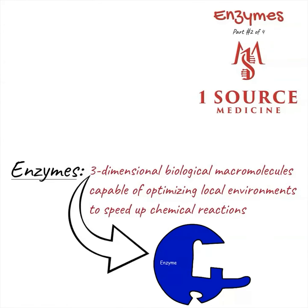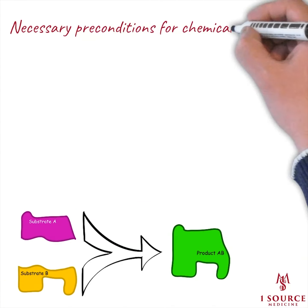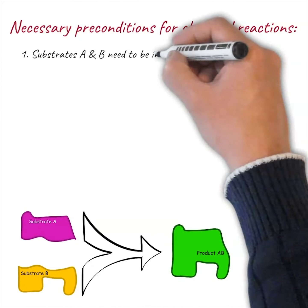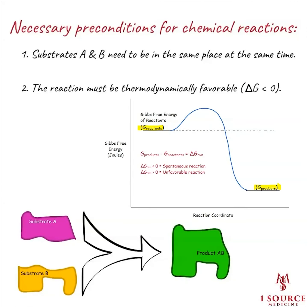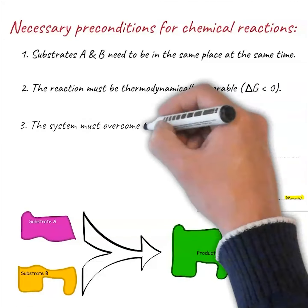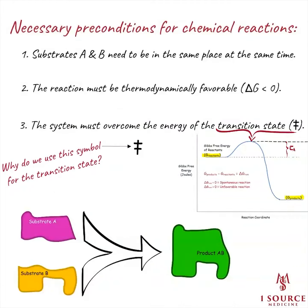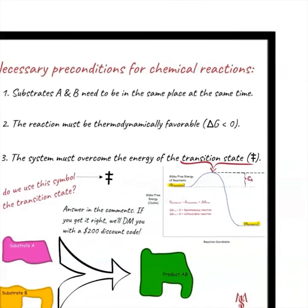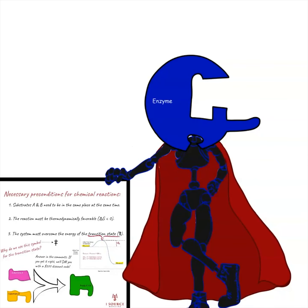But what does it mean to optimize the environment for a given reaction? In order for two molecules to react with one another, a few preconditions must be coincident. First, the substrate molecules need to exist in the same place at the same time. Secondly, the reaction must be thermodynamically favorable, meaning the cumulative Gibbs free energy of the products must be lower than that of the reactants so that delta G is negative. Finally, the local energy maximum of the transition state must be overcome so as to realize the energy payoff implicit to the formation of the more thermodynamically stable products. Since this is a video focusing on enzymes, you may have already guessed that our protagonists are capable of facilitating all three of these conditions.